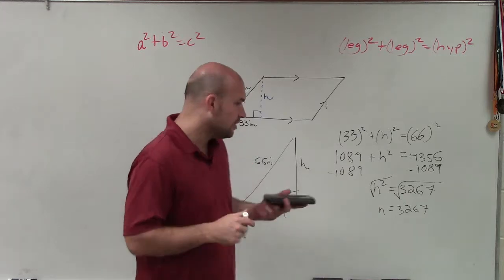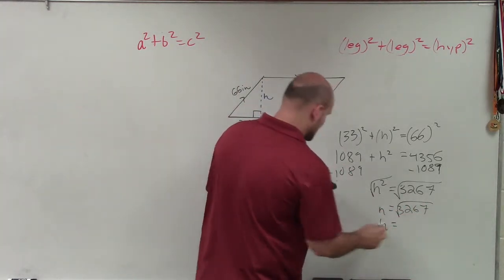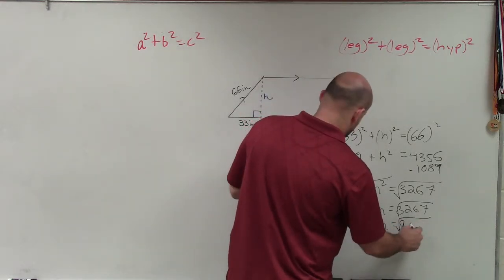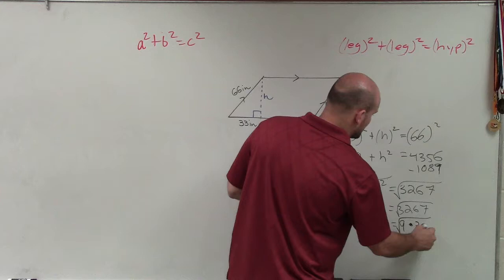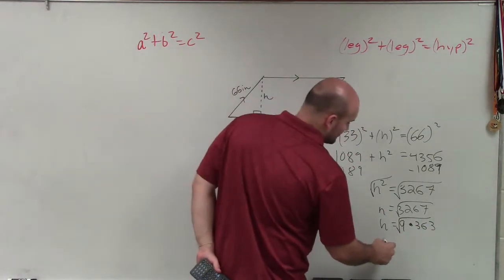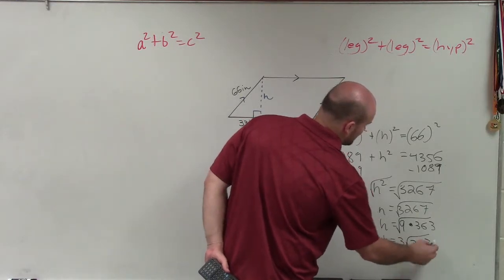OK, so great, so I take the square root of this, and now I can break this up into a perfect square by rewriting this as 9 times 363. So now I can take the square root of 9, which is 3, and I'm left with the square root of 363. So there you go,